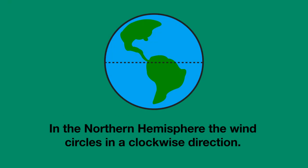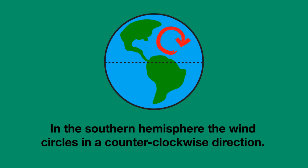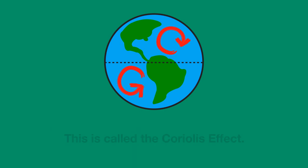The same happens to the wind as happens to your straight line. In the Northern Hemisphere, the rotation of Earth rotates the wind in a clockwise direction. In the Southern Hemisphere, the wind is rotated in a counterclockwise direction. This is called the Coriolis effect.